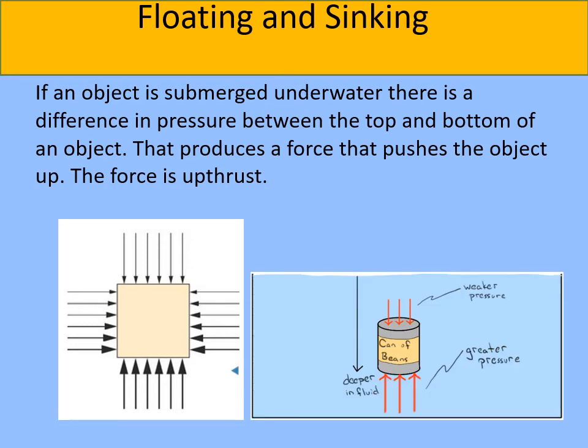Here's another diagram imagining a can of beans submerged in water. You can see that the greater pressure is on the bottom surface of the can of beans compared to the weaker pressure on the top.